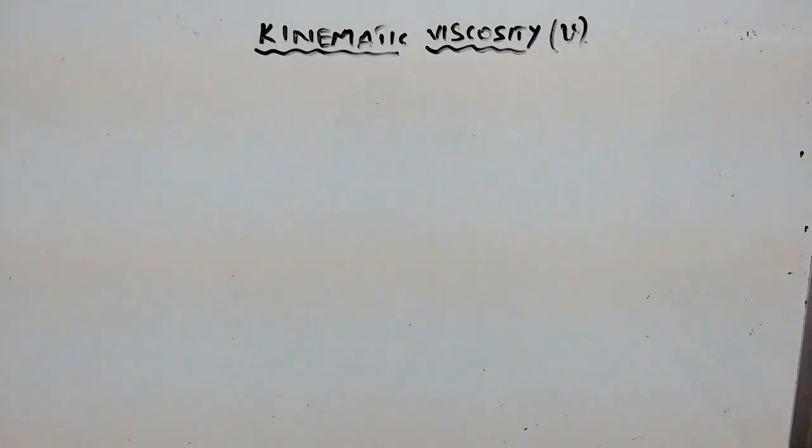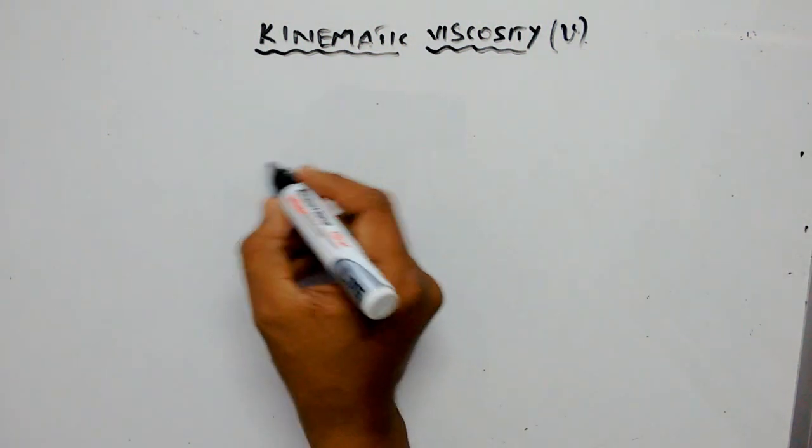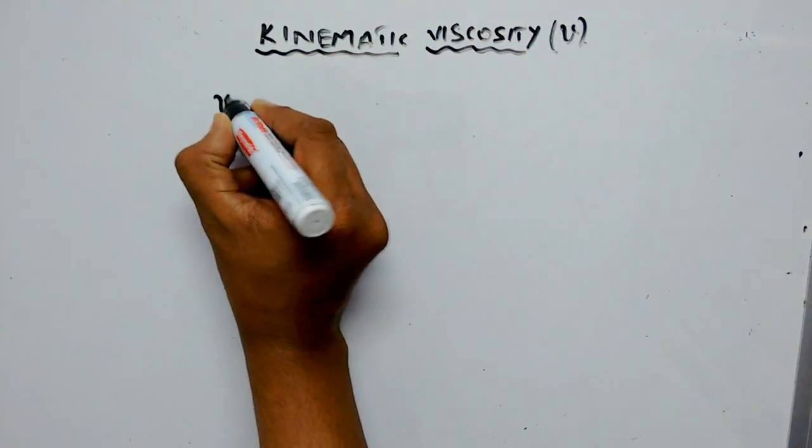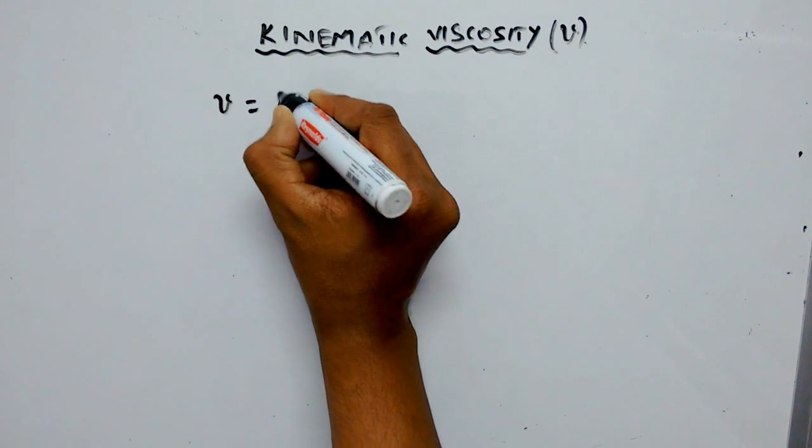Kinematic viscosity is defined as the ratio between dynamic viscosity to density of the fluid. It is represented by ν (nu). According to the definition, you can write ν equals the ratio between dynamic viscosity and density.